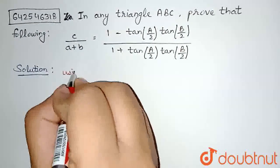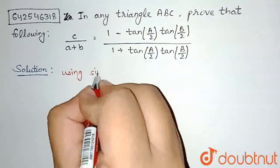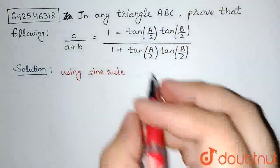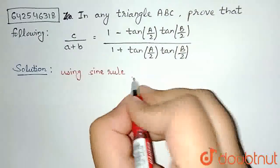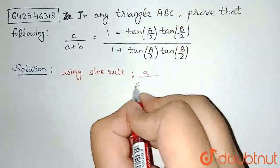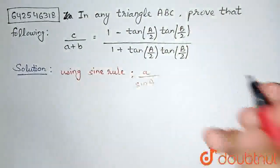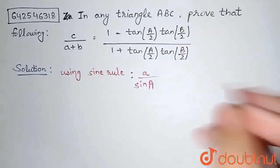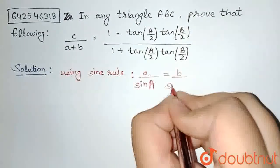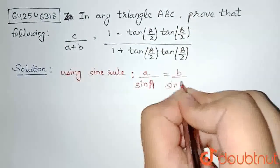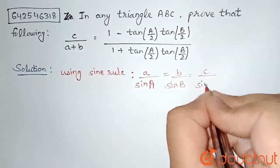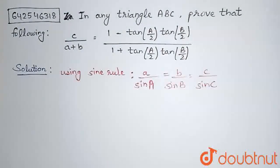The formula I can use here is the sine rule. Sine rule gives us the value of small c, small a and small b. The sine rule is: a/sinA = b/sinB = c/sinC. This is our sine rule.